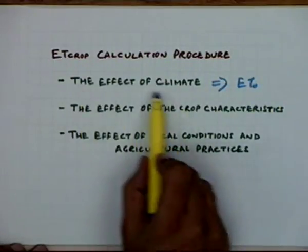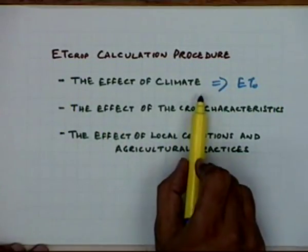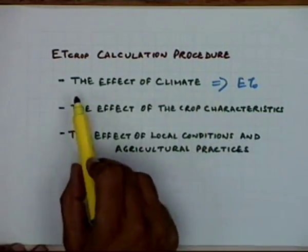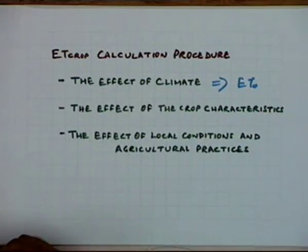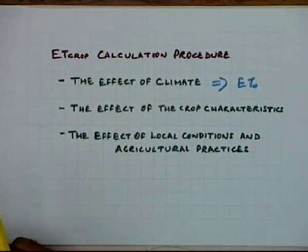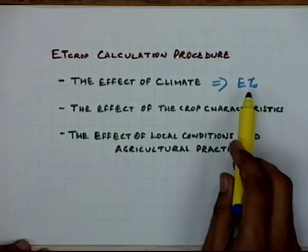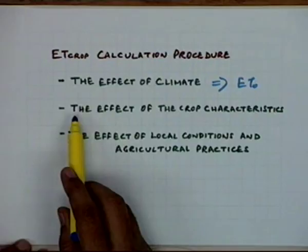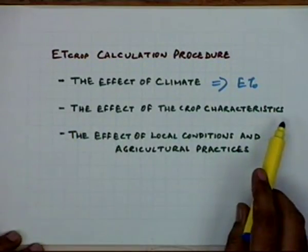This we have dealt with in great length. We have looked at all the methods which are available to find out the ET₀ value and we have also looked at what are the data requirements of those methods. Having done so, let us now go on to the next step, which is to incorporate the effect of crop characteristics.